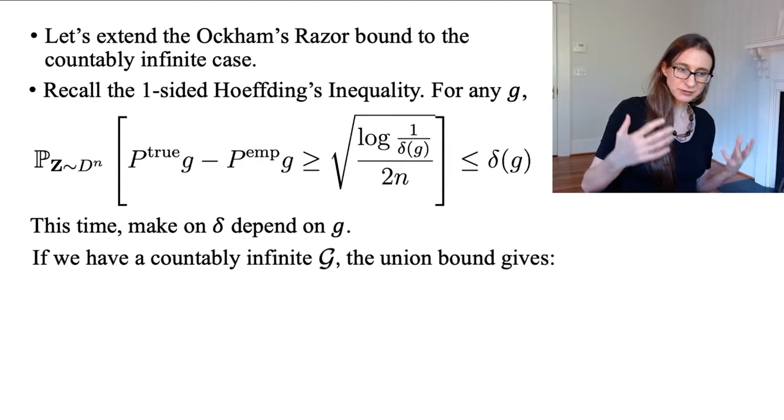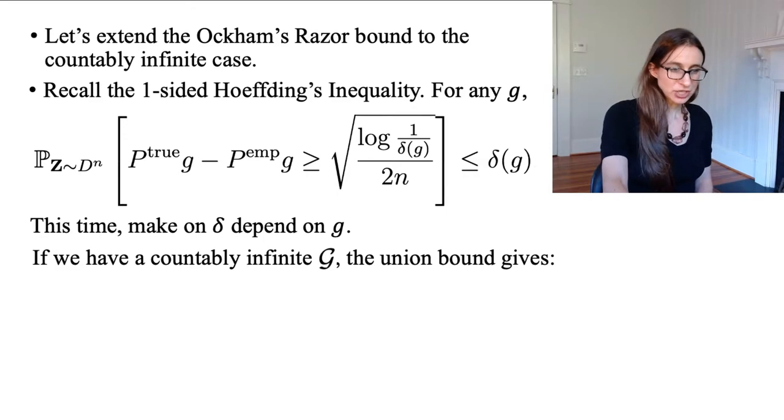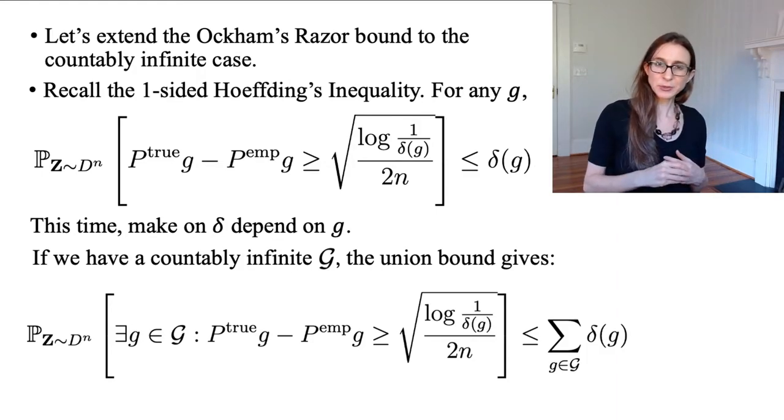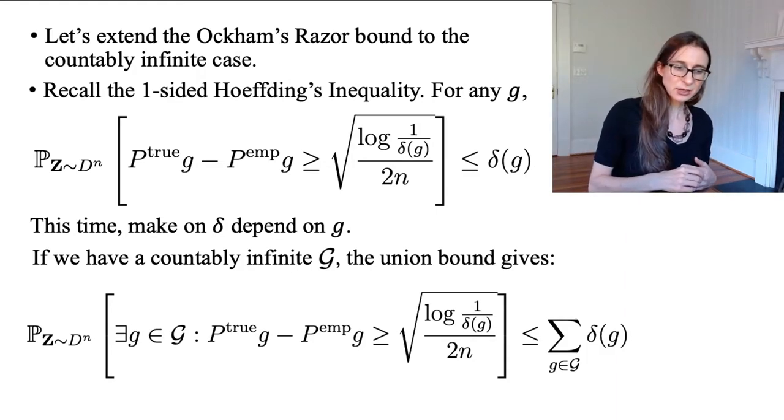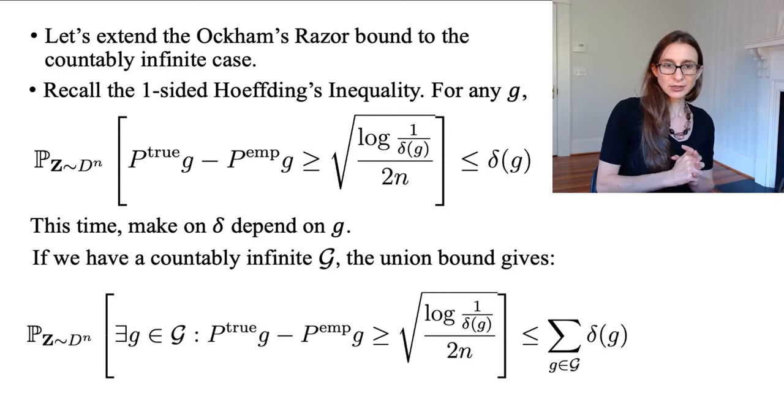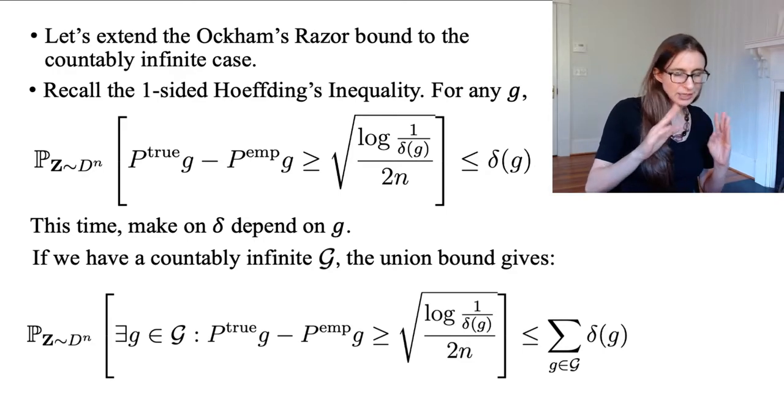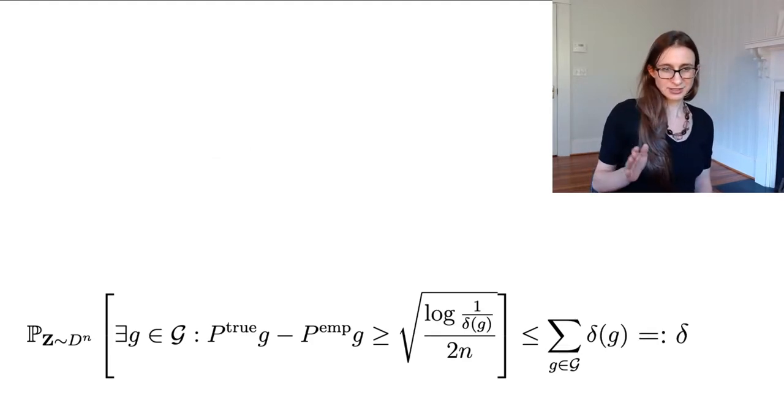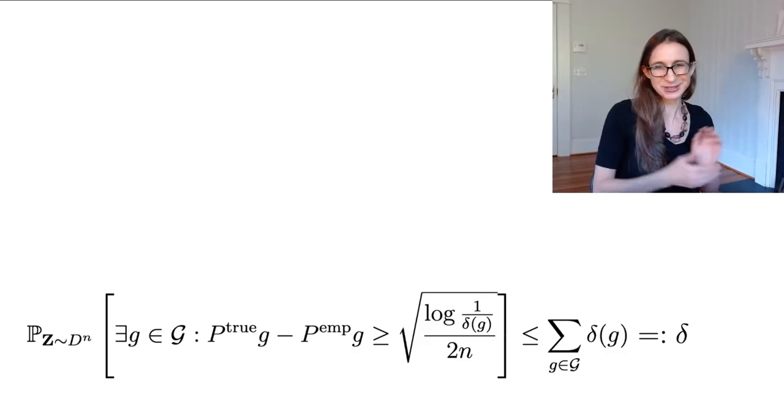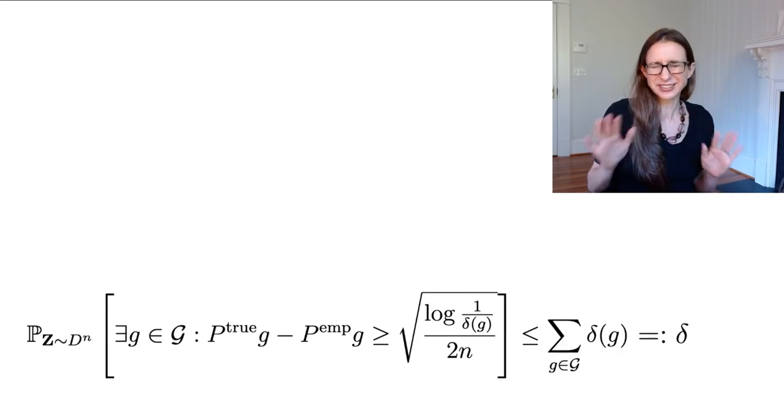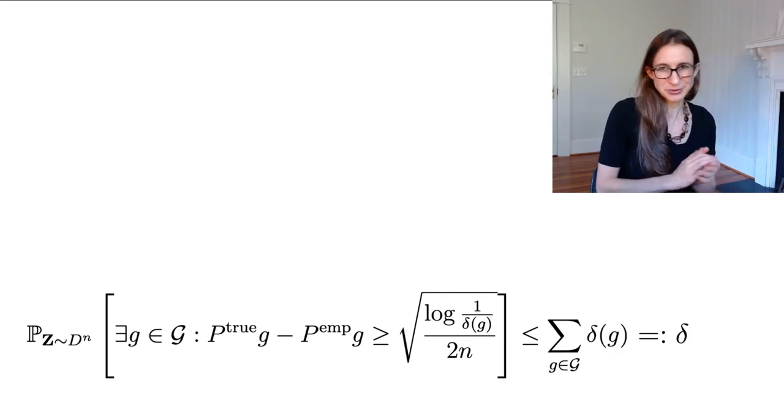So if I have a countably infinite loss class g or countably infinite function class F, then the union bound ends up looking like this, because remember we're supposed to sum up all those probabilities, and so we're summing up all of the delta g's over there, right there on the right. Now if I was even slightly smart, I would have made sure that when I assigned the delta g's, that the sum of them is finite, because otherwise this bound would be vacuous. So let's assume that I chose the delta g's in such a way that the sum of them is going to be finite, and I'm going to call that delta again.